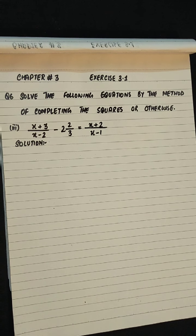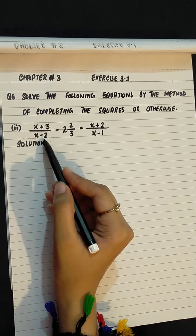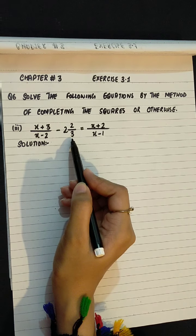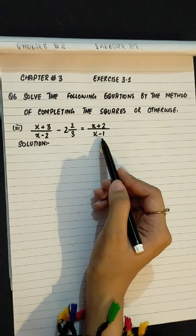Solve the following equations by the method of completing the square or otherwise. Question is x plus 3 divided by x minus 2 minus 2 and 2 over 3 equals to x plus 2 divided by x minus 1.